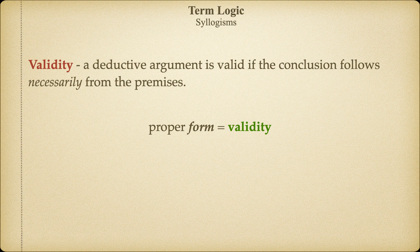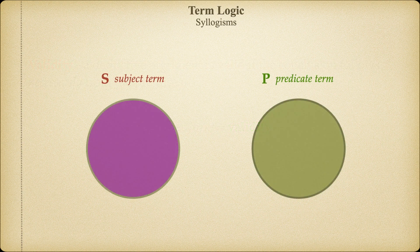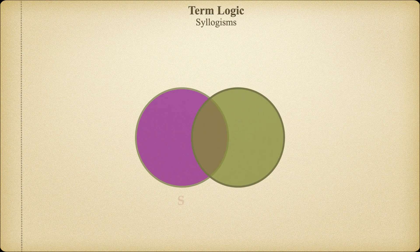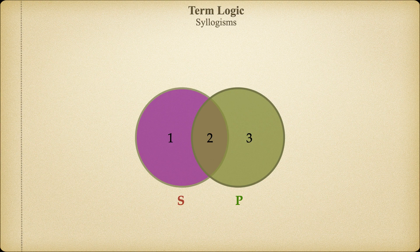To help us visualize the form of a categorical syllogism, we'll employ Venn diagrams. You'll recall that a Venn diagram is composed of at least two circles representing the set or domain represented by the subject and predicate terms of a categorical proposition. By overlapping the two circles, we get three distinct regions. Region 1 represents only members of the subject class, region 2 represents members of both classes, and region 3 represents members of the predicate class only.